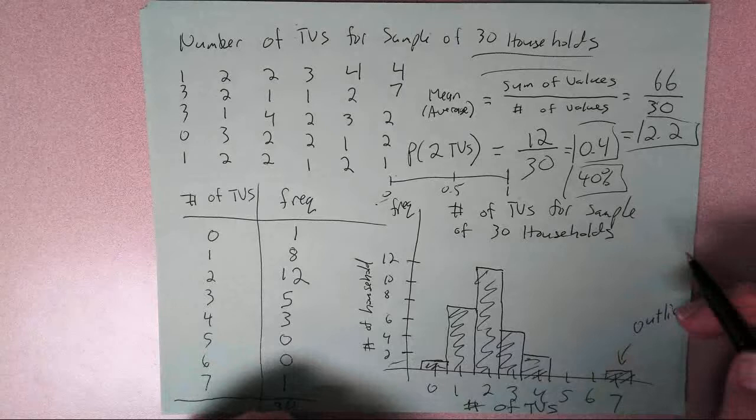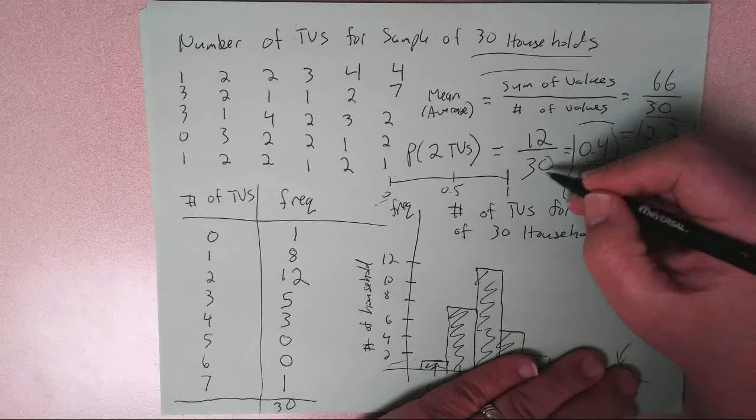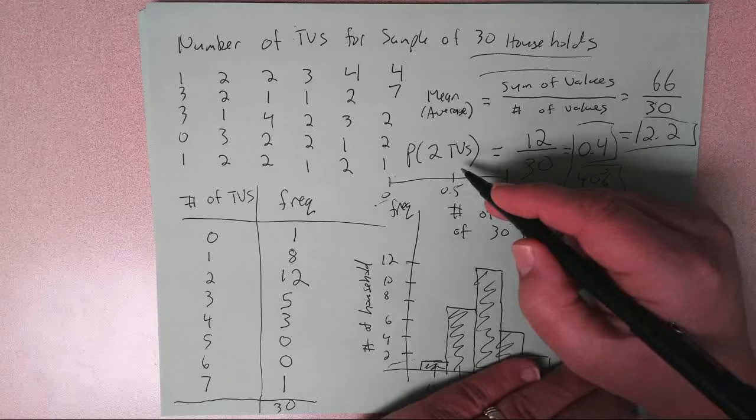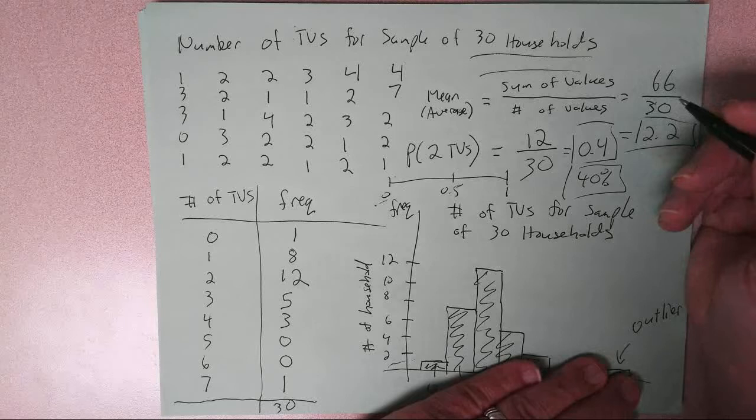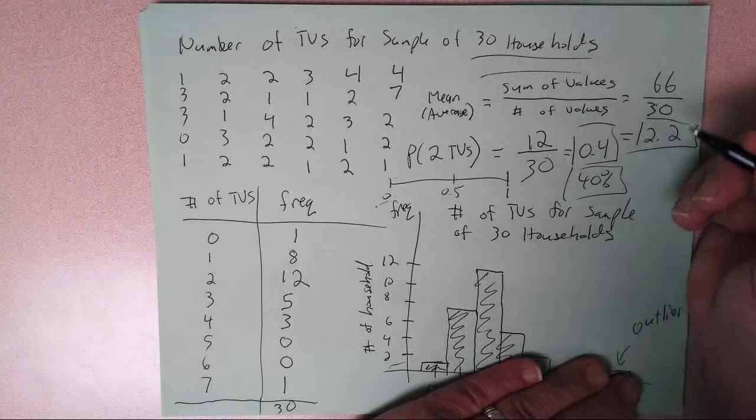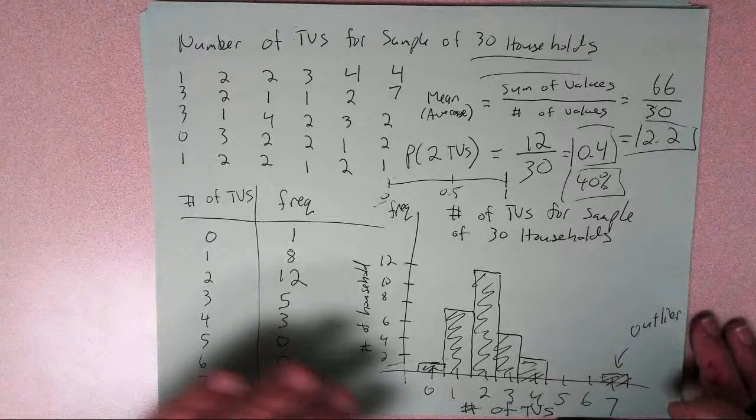And so that's the idea behind probability. A probability is always, the bottom number is always the total number of outcomes that are possible. And then the top number is always the number of outcomes that are in the probability you want to find. So if you have a jar with 10 marbles and 3 of them are white and the rest are black, the probability of drawing a white marble would be 3 over 10. 3 out of the 10 marbles are white, and you get a 30% chance. So that's the basic idea of probability.